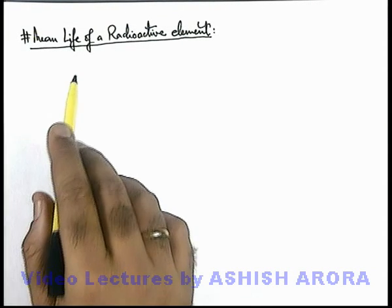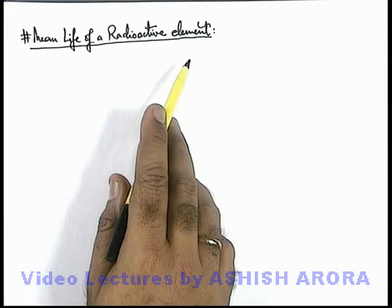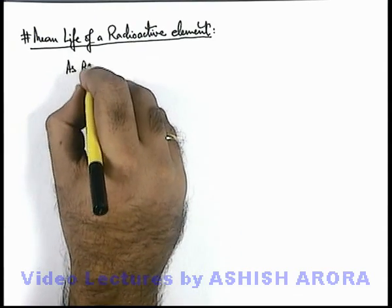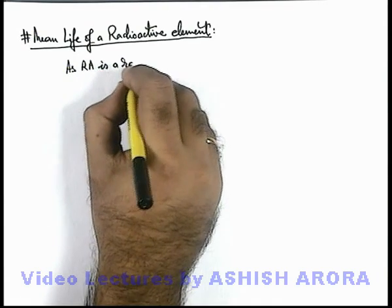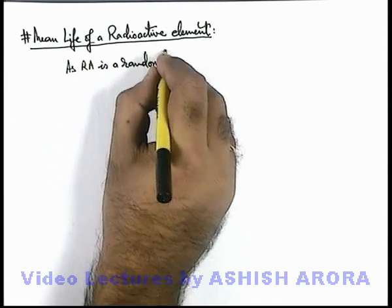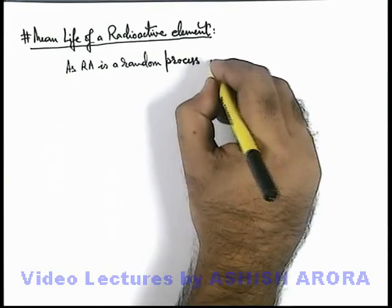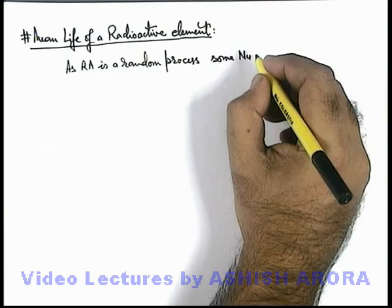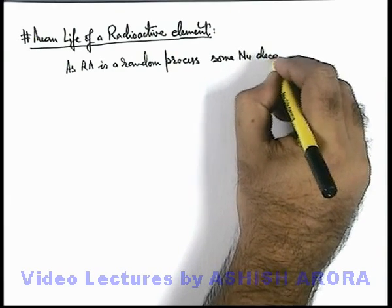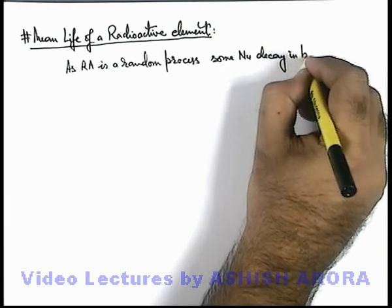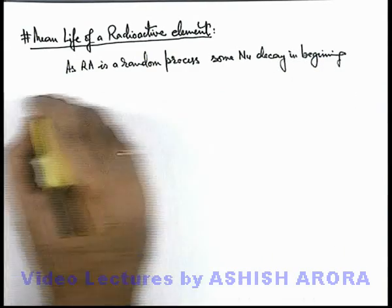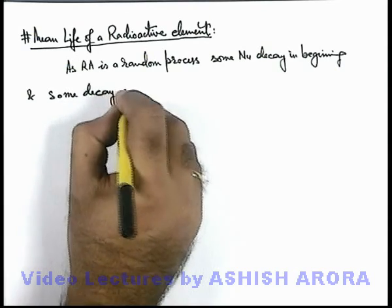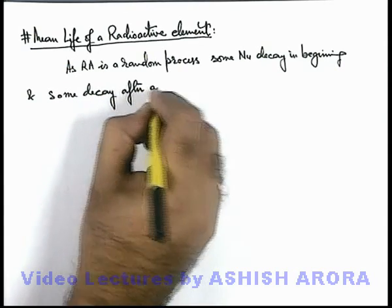Let us now discuss the mean life of a radioactive element. Radioactivity is a random process. If we talk about a sample of a radioactive element, some nuclei decay in the beginning and some decay after a long time.